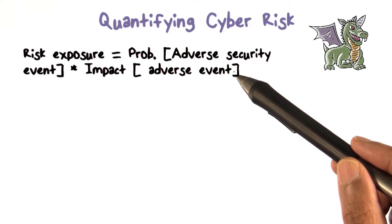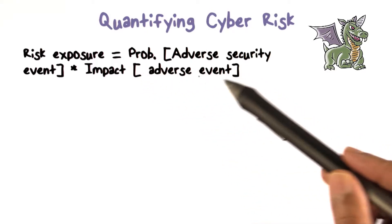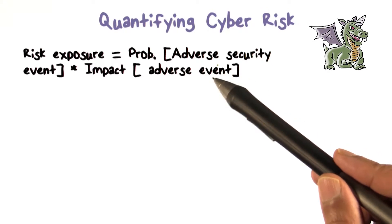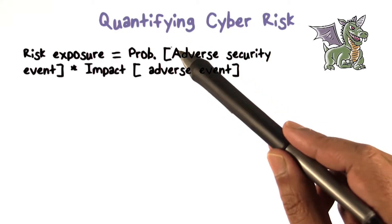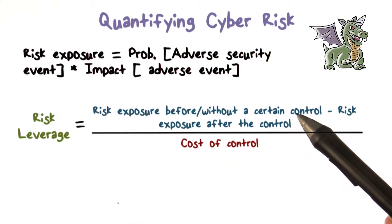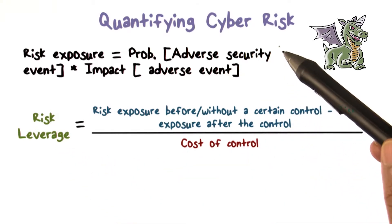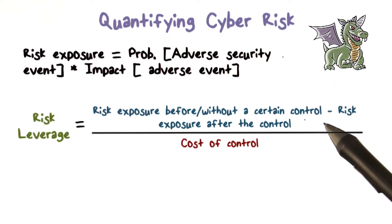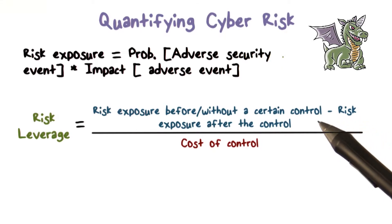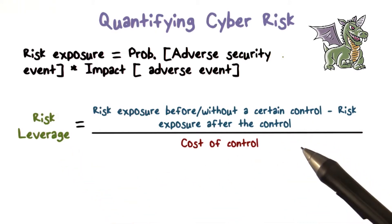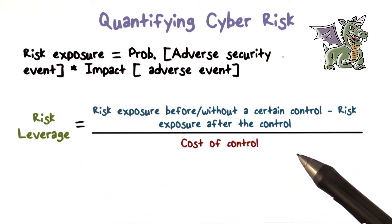When quantifying, you have to quantify both of these quantities — the probability as well as the impact, or the loss you're going to suffer as a result of the adverse event. So there's something called risk leverage, because we like to reduce our risk exposure. One way we can do that is by having some sort of a control in place, though the control comes with a cost.